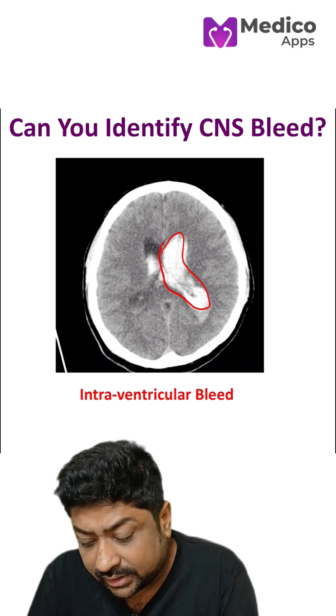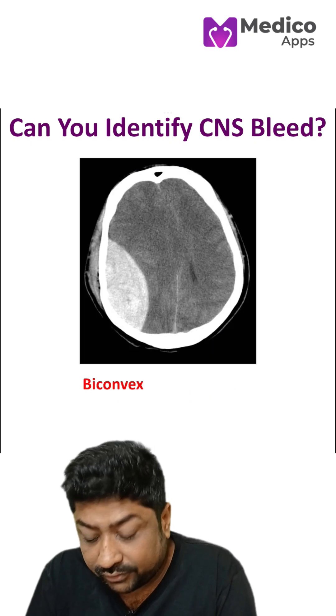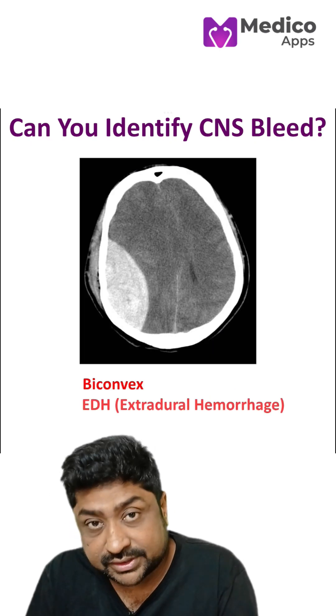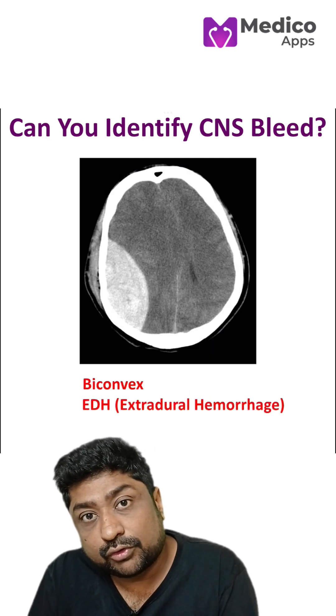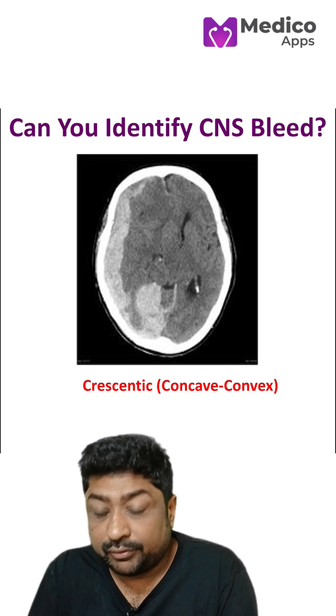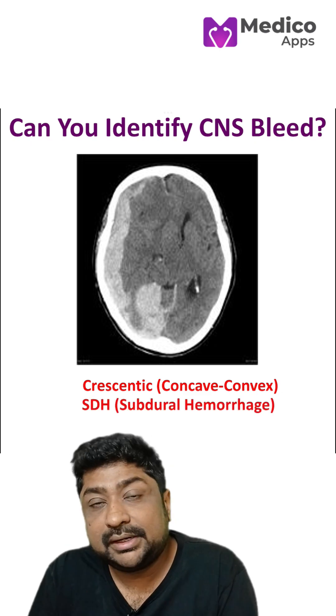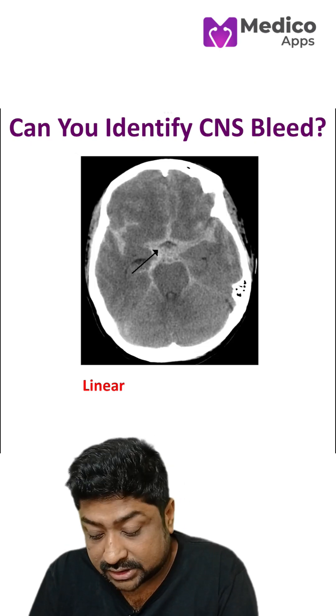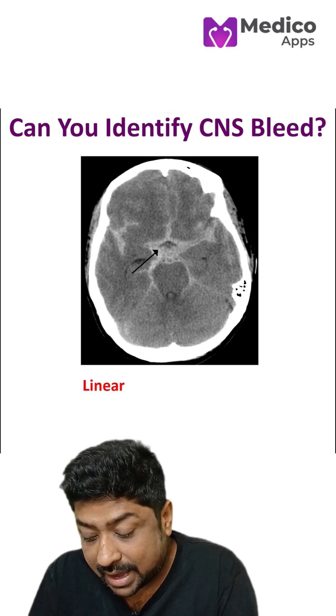Let's revise one by one. Biconvex — extradural. Crescentic or concavo-convex — subdural. When you have linear bleeds, it's primarily subarachnoid hemorrhage. You can also have an intra-parenchymal bleed or an intra-ventricular bleed. Thank you.